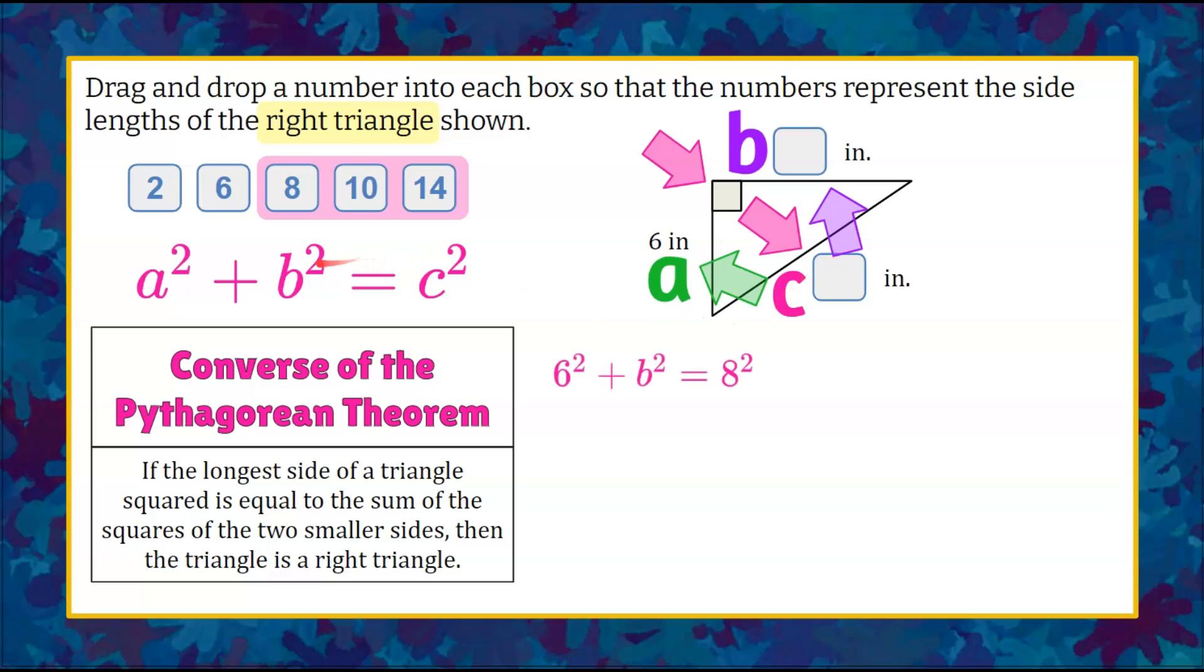So bringing down our formula, we know that we're going to replace A with 6, and C, our hypotenuse, with 8. So we're guessing. So let's solve this and see if it's possible. So 6 squared is 36. 8 squared is 64. To solve for B, we're going to subtract 36 from each side, leaving us B squared is equal to 28. 64 subtract 36 is 28.